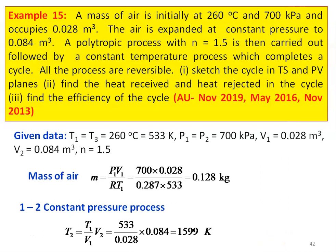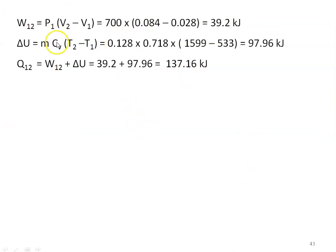For the 1 to 2 constant pressure process, we calculate temperature T2. For constant pressure, T2 by V2 equal to T1 by V1, so T2 equal to 533 divided by 0.028 into 0.084, equal to 1599 Kelvin. Work done W1-2 equal to P1 into V2 minus V1, which is 700 into 0.084 minus 0.028, equal to 39.2 kilojoules. Change in internal energy is M·CV into T2 minus T1: 0.128 into 0.718 into 1599 minus 533 equal to 97.96 kilojoules. Heat transfer from first law equals W plus delta U: 39.2 plus 97.96 equal to 137.16 kilojoules.